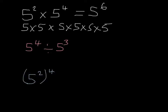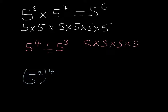The second one — this time we've got 5 to the power of 4 divided by 5 cubed. I want to think about this as 5 times 5 times 5 times 5 divided by 5 cubed, which is 5 times 5 times 5.